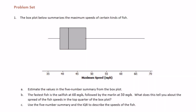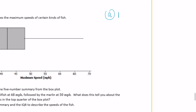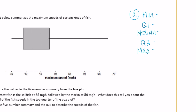6th grade module 6 lesson 15 problem set number one. The box summarizes the maximum speeds of certain kinds of fish. Part A: estimate the values of the five number summary from the box plot. The five number summary includes the minimum, the maximum, the median, quartile one, and quartile three. That's the order I think of the five number summary.